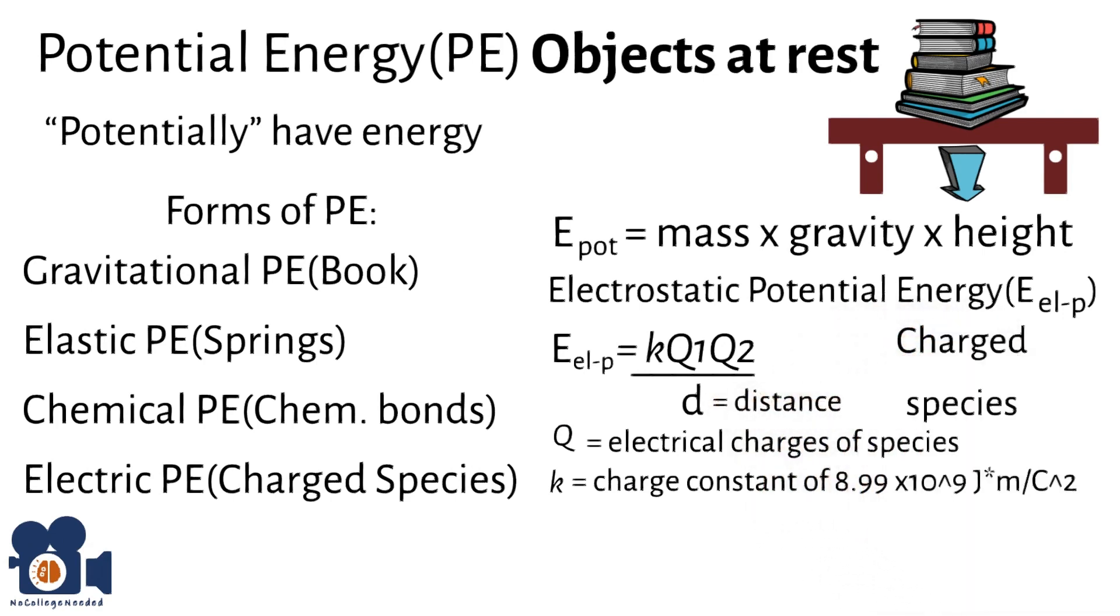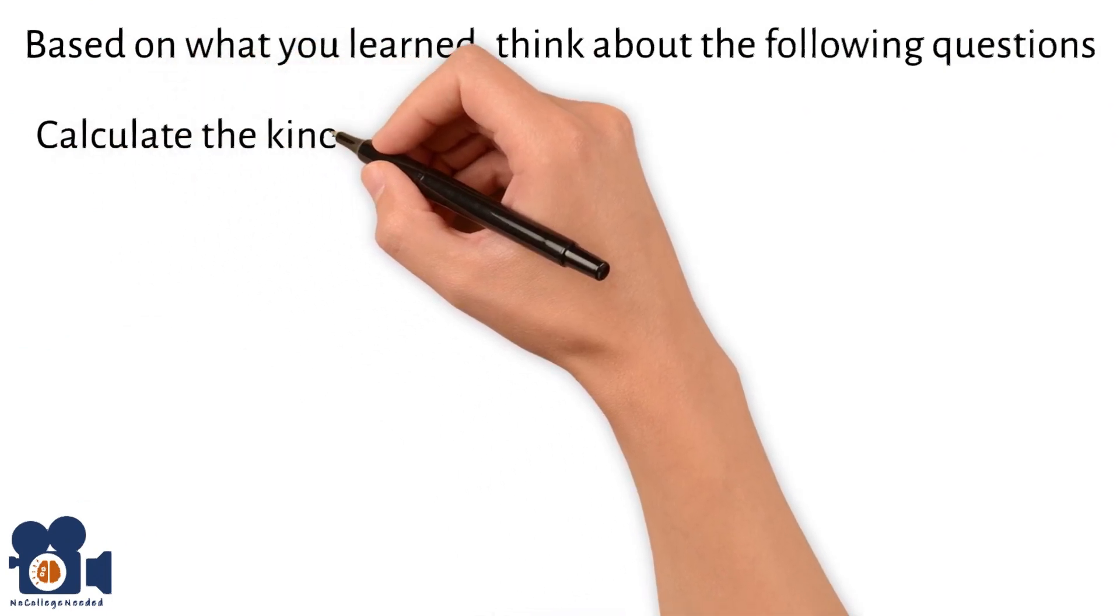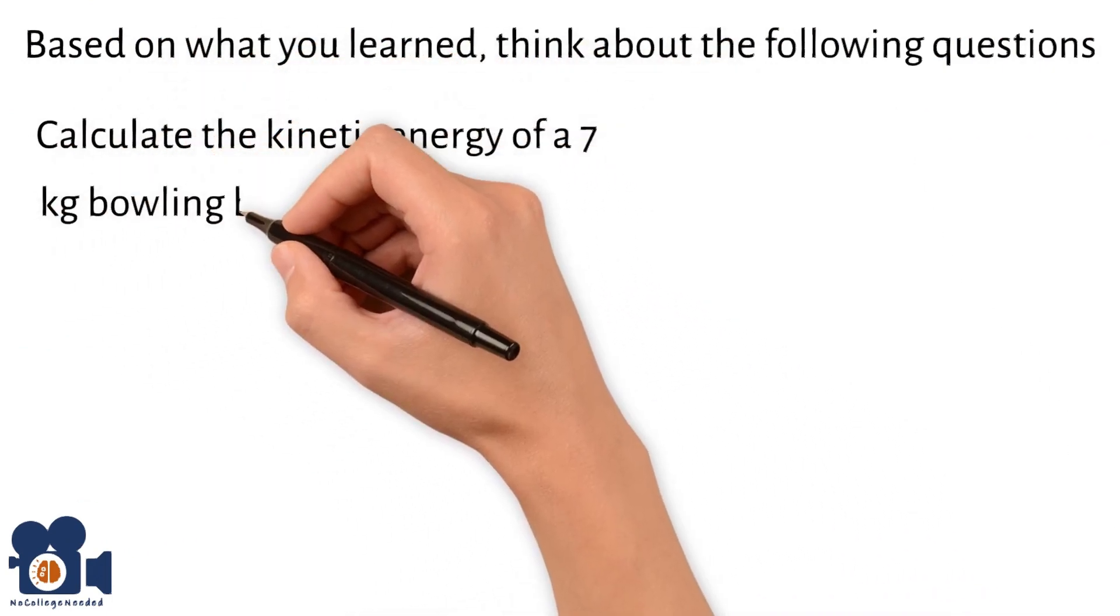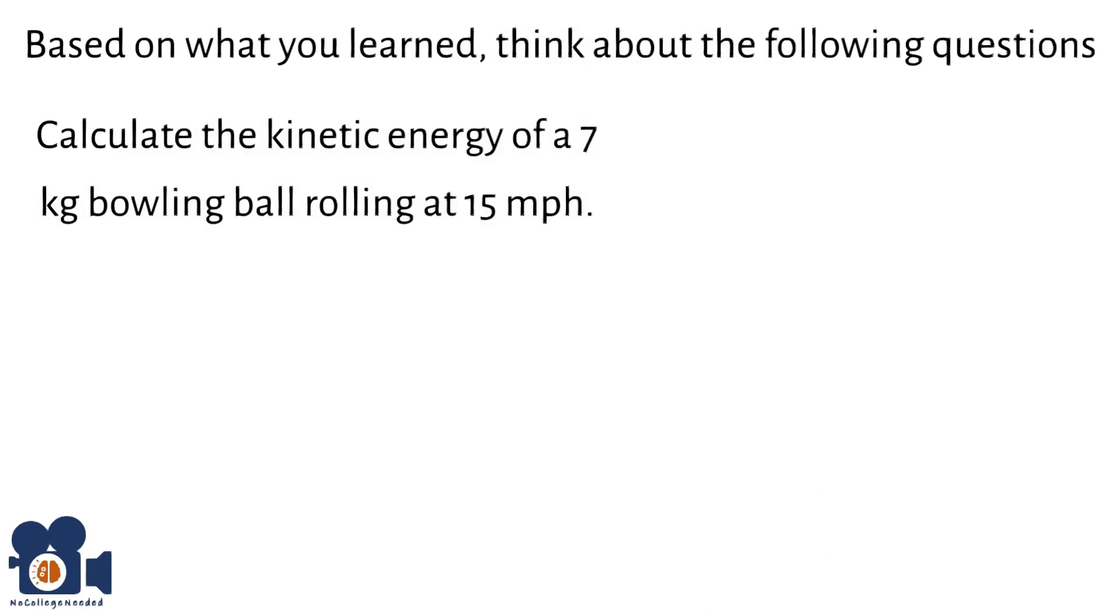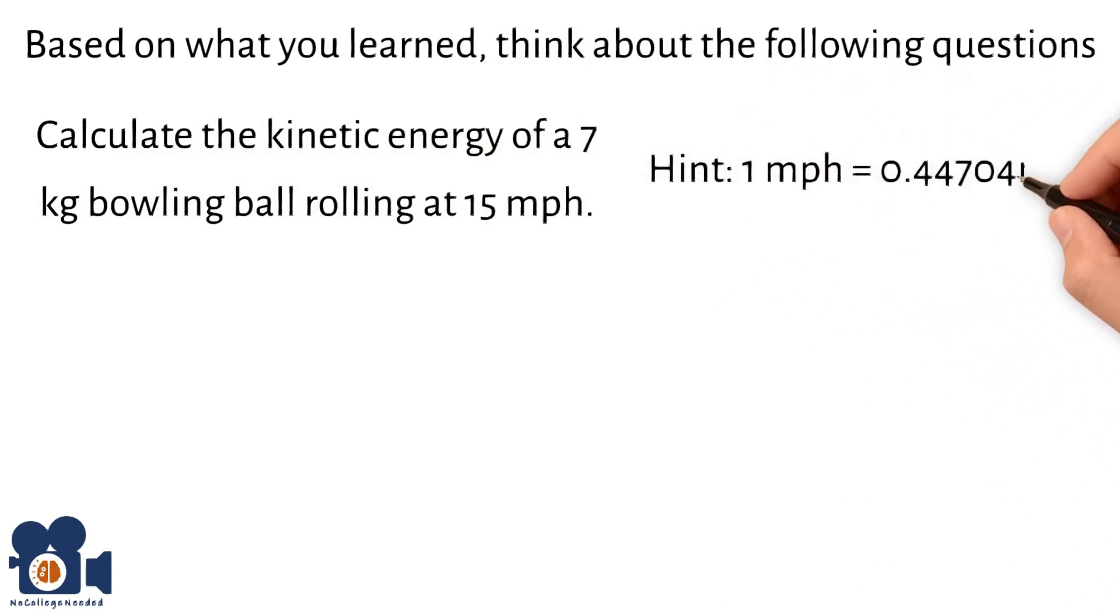I hope this explanation helps, and if you have any further questions, feel free to ask. If you found value in the video, please like it and let people know about the channel because it really does help spread the knowledge. Based on what you learned, think about the following questions. Calculate the kinetic energy of a 7-kilogram bowling ball rolling at 15 miles per hour. Hint: 1 mile per hour equals 0.44704 meters per second.